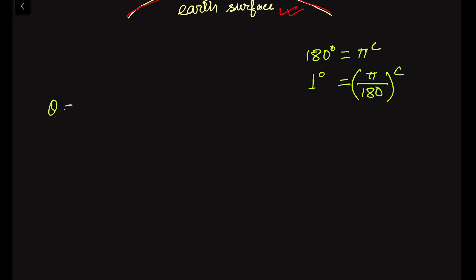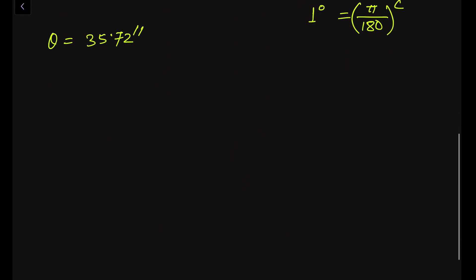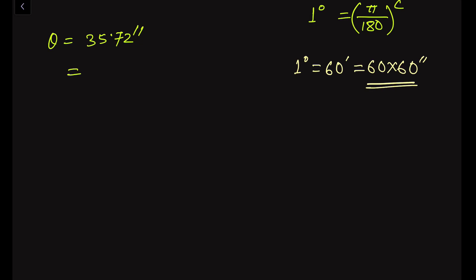We are given that theta is equal to 35.72 seconds. To express this in degree units, we understand that one degree equals 60 minutes, and one minute equals 60 seconds, so one degree equals 60 × 60 seconds. Therefore, one second is equal to 1/(60 × 60) degrees.